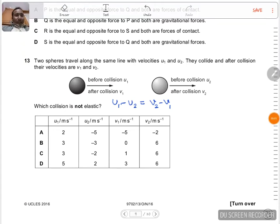Hello, this is question number 13 from 2016 October November paper 13. It says there are two spheres traveling along the same line with velocities u1 and u2. They collide and after collision their velocities are v1 and v2.